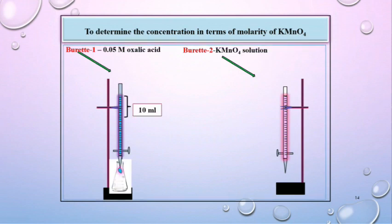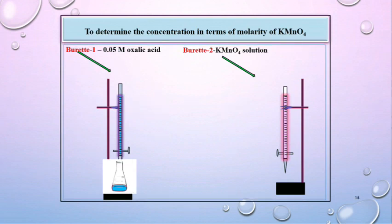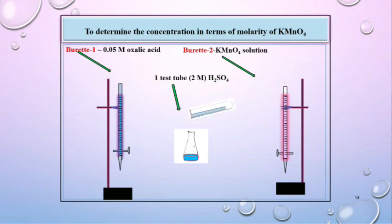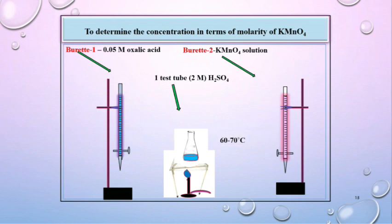Take 10 ml of this 0.05 molar oxalic acid solution in clean and dry conical flask. Then add to this solution 1 test tube, 2 molar H₂SO₄. Heat this solution up to 60 to 70 degree centigrade.